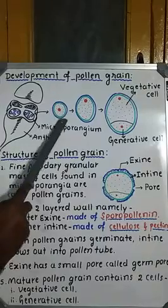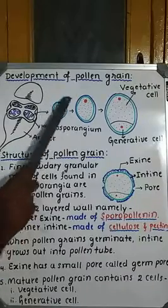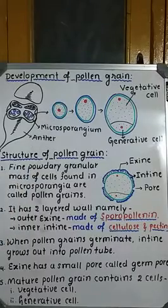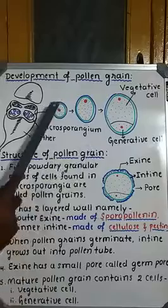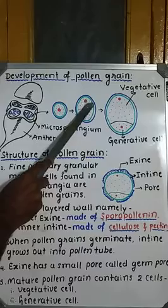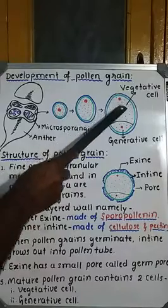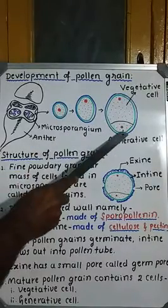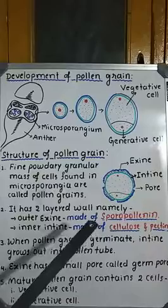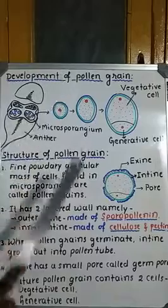Now let us study how the pollen grain gets matured. Before maturity, this pollen grain contains a centrally located nucleus along with a small amount of cytoplasm. Eventually, this centrally located nucleus migrates towards the peripheral region, then divides, and the nuclei move towards the opposite poles. After this, a small cellulosic wall develops between these two nuclei.